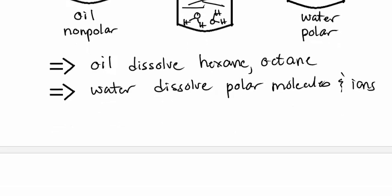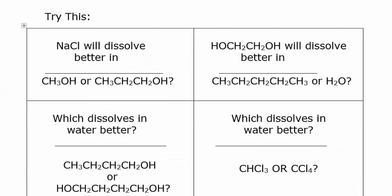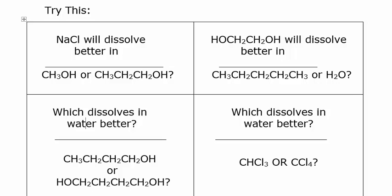We can use this kind of information to answer lots of questions about what will dissolve in what. So let's look at this one, the first one. Sodium chloride will dissolve better in which of these two solvents? If you look at those two, they both have an OH on them, which tells you that they both have hydrogen bonding. But which one will dissolve better in? It will dissolve somewhat in both, but it will dissolve better in one that is more like it, meaning more polar.